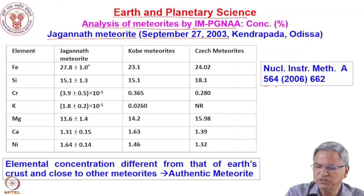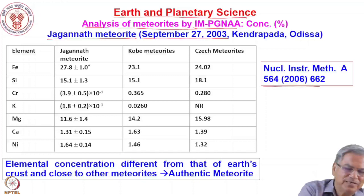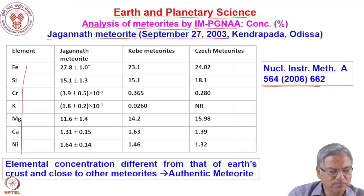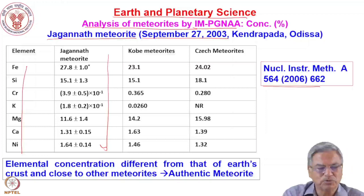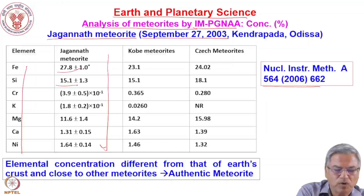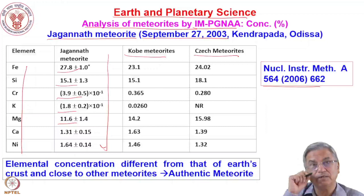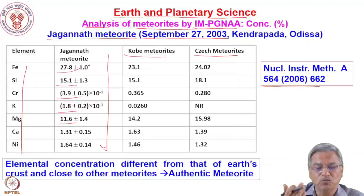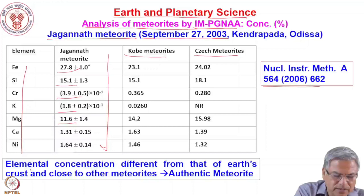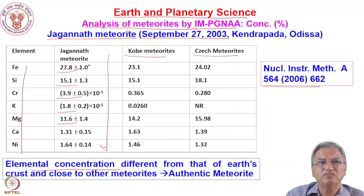The data from Dr. Acharya shows elements representing the Jagannath meteorite: iron, silicon, chromium, potassium, magnesium, calcium, nickel. Concentrations are given in percentage — 27%, 15.1%, 0.39%, 0.18%, 11.6%, and so on. These results were compared with other meteorites published elsewhere — Kobe meteorites, Czech meteorites — to understand whether the elemental concentration is different from Earth's crust and close to other known meteorites.